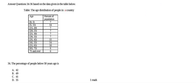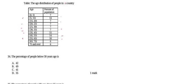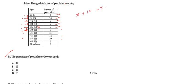The next section asks us to answer questions 34 to 36 based on a table showing age distribution of people in a country, with age groups and percentage of population. Question 34 asks for the percentage of people below 30 years. Adding the relevant age groups: 7 + 14 + 7 + 7 + 7 = 42. Hence the answer is 42, which is option B.